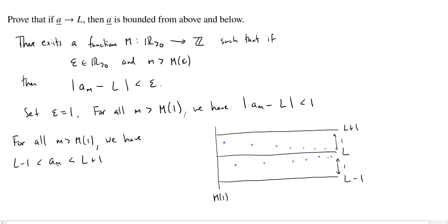Well, we do have this little condition here, though, right? We have to go out far enough in the sequence. It might be that before you get to m of 1, then you have some points which are either above or below, or maybe even both, L plus 1 and L minus 1.